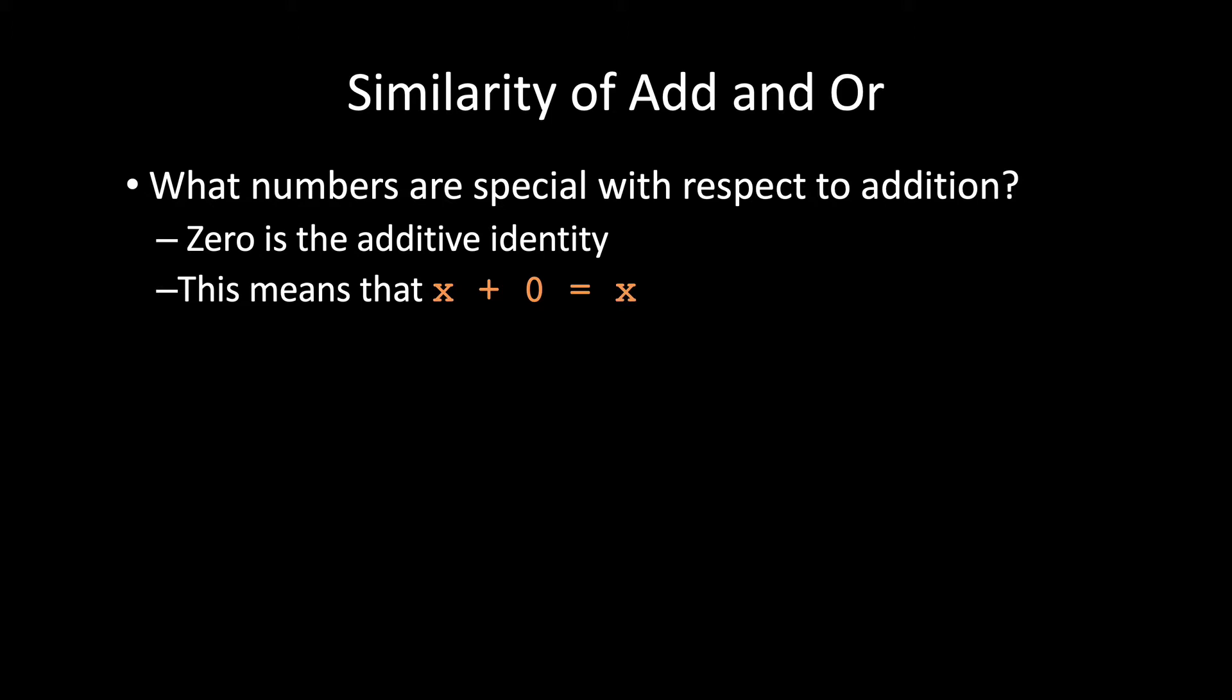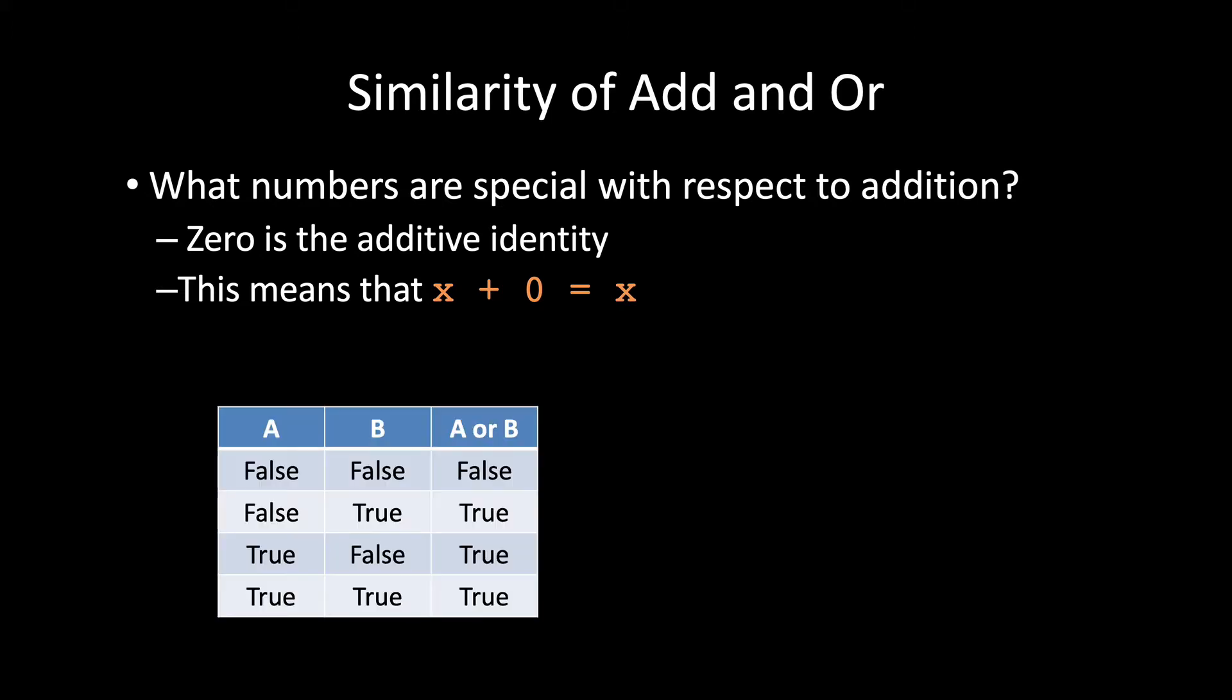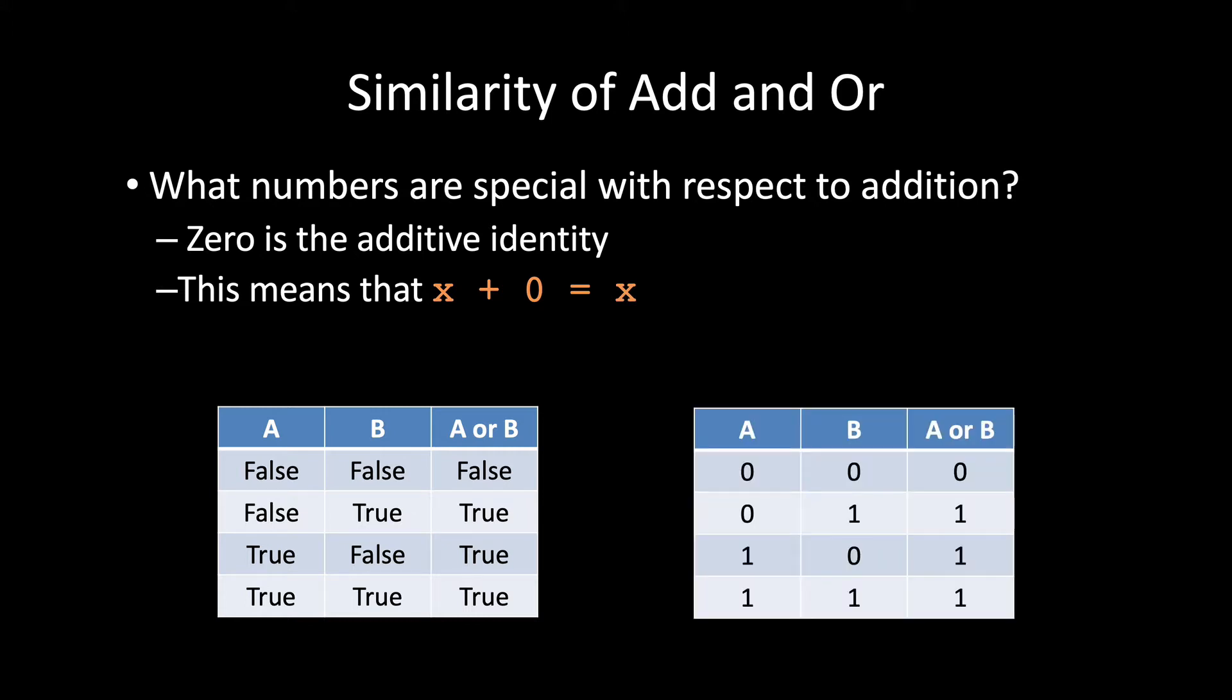With that in mind, here's the truth table for or. Let's replace true and false with zero and one. We can see that in this version of the truth table, zero or false acts like the additive identity. X or false is always x. Just as putting a zero in an addition expression doesn't change the output, putting a false into an or expression doesn't change the output.